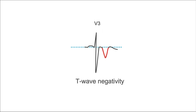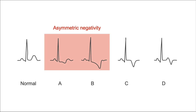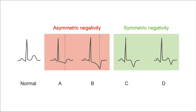Now let's turn to T-wave negativity or T-wave inversion. Here are the most important examples of T-wave patterns. On the far left is a normal T-wave for comparison; the other four patterns are negative and therefore abnormal. The first important distinction is this: the T-waves in examples A and B are asymmetric — the descending part looks different from the ascending part. Examples C and D, on the other hand, are symmetric — the descending part is a mirror image of the ascending part.